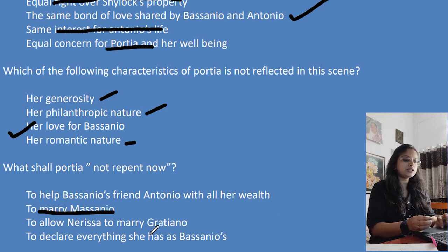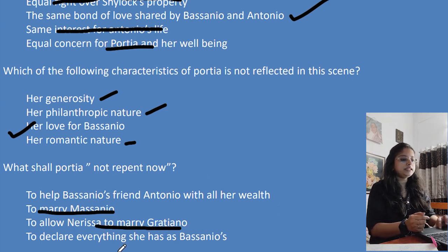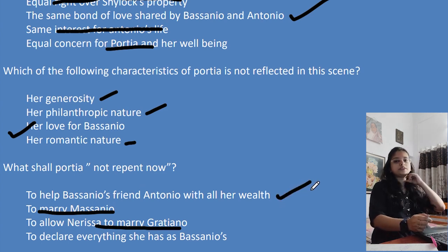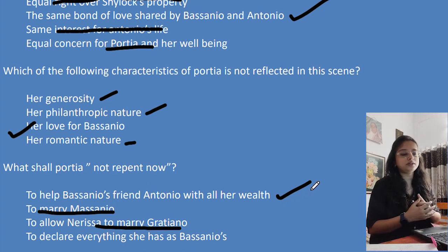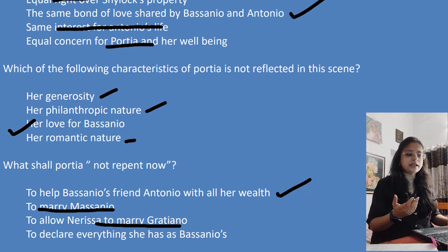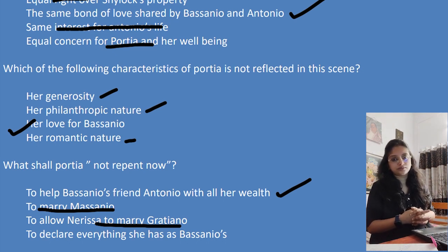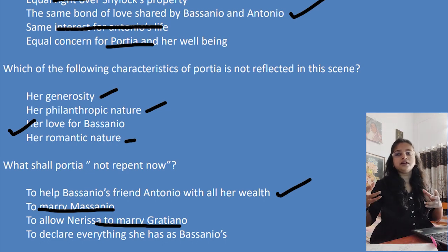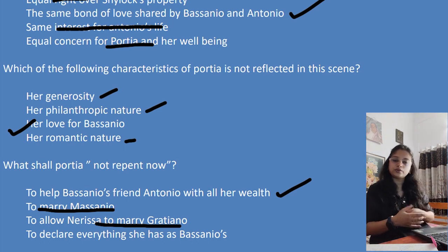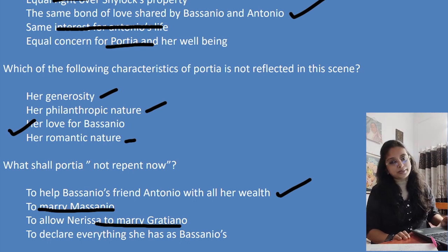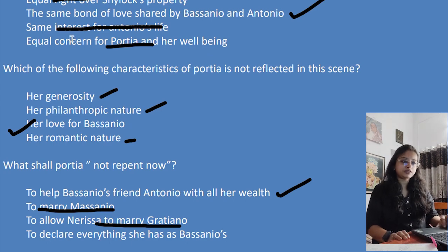What shall Portia not repent? The options include helping Bassanio's friend Antonio with all her wealth, marrying Bassanio, allowing Nerissa to marry Graziano, or declaring everything as Bassanio's. The correct answer is helping Antonio. When Lorenzo was praising Portia, she said it doesn't matter to her who she is helping — it is her nature to help whoever needs it. She doesn't repent after helping somebody.